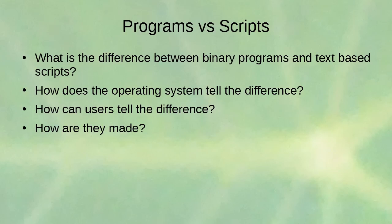What is the difference between binary programs and text-based scripts? Binary programs are files made out of machine code, readable by the CPU directly. Text-based scripts are human readable programs that are interpreted and converted to instructions as they run. Binary programs are much faster, while text-based scripts are much easier to read, modify, and update.